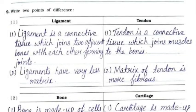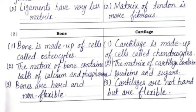Question 9: Write two points of difference. First, between ligament and tendon: ligament is a connective tissue that joins two adjacent bones forming joints, while tendon is a connective tissue that joins muscles to bones. Ligaments have very less matrix whereas the matrix of tendon is more fibrous. Second, between bone and cartilage: bone is made up of cells called osteocytes; cartilage is made up of cells called chondrocytes. The matrix of bone contains salts of calcium and phosphorus, while the matrix of cartilage contains proteins and sugar. Bones are hard and non-flexible; cartilages are not hard but are flexible.